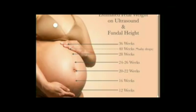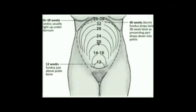Summary of Bartholomew's Rule landmarks: symphysis pubis = 12 weeks; midway between symphysis and umbilicus = 16 weeks; umbilicus/navel = 20 weeks; just above umbilicus = 24 weeks; midway between umbilicus and xiphoid = 28 weeks (7 months); xiphoid process = 36–38 weeks. At 40 weeks, lightening causes the fundus to descend. Always remember the three landmarks: symphysis pubis, umbilicus, and xiphoid process.